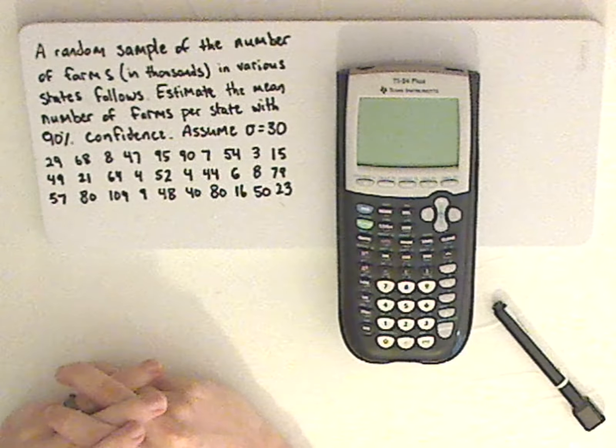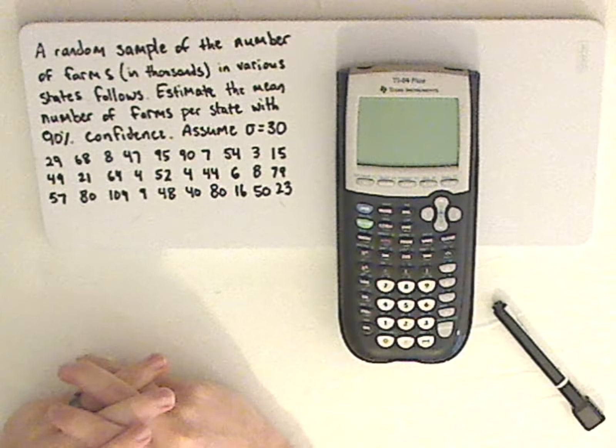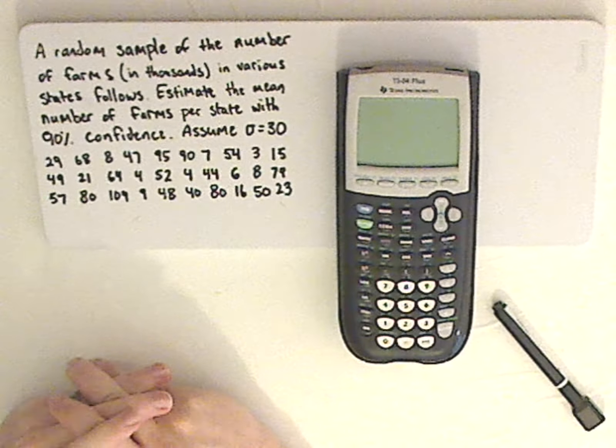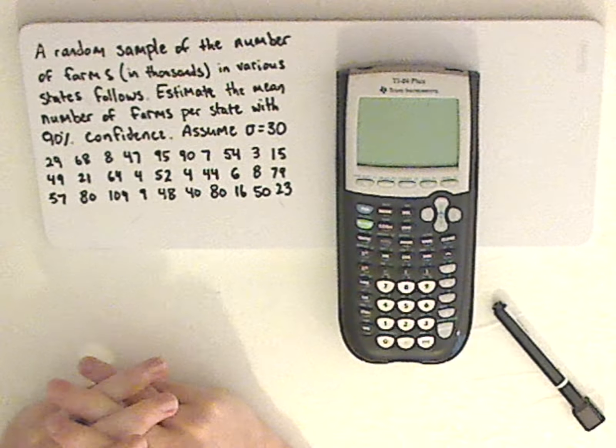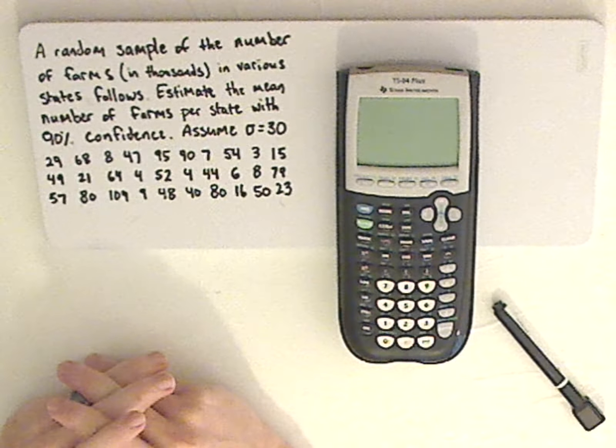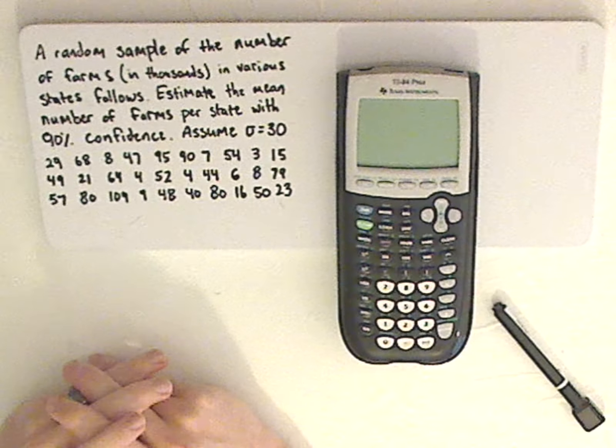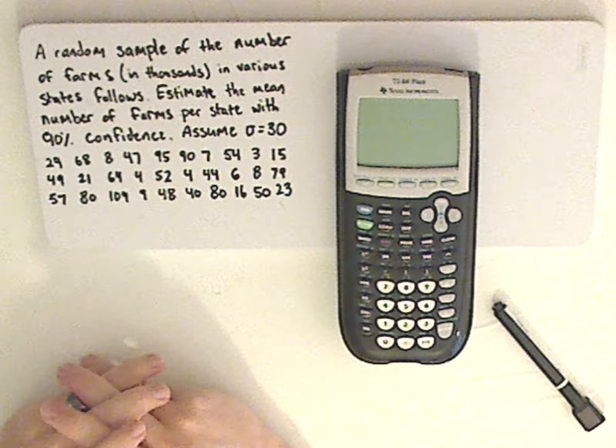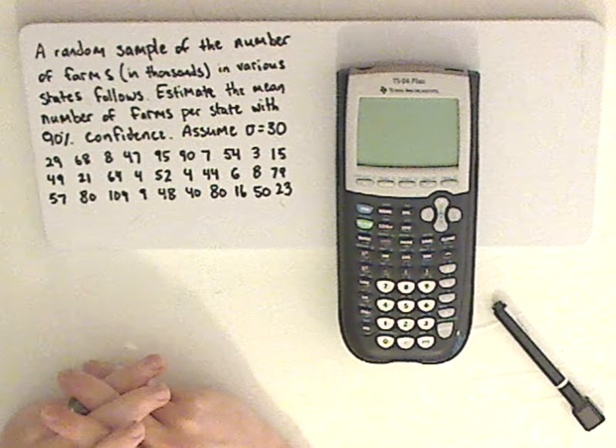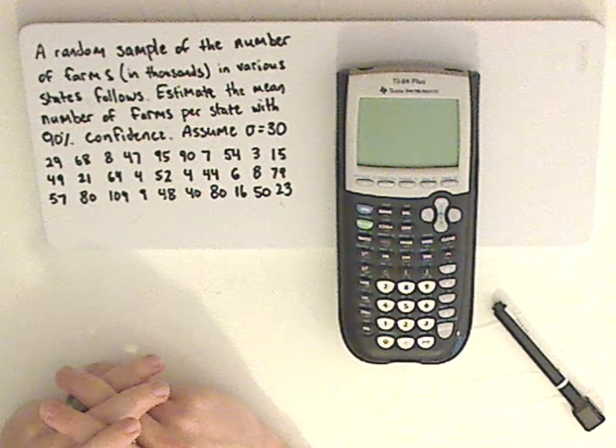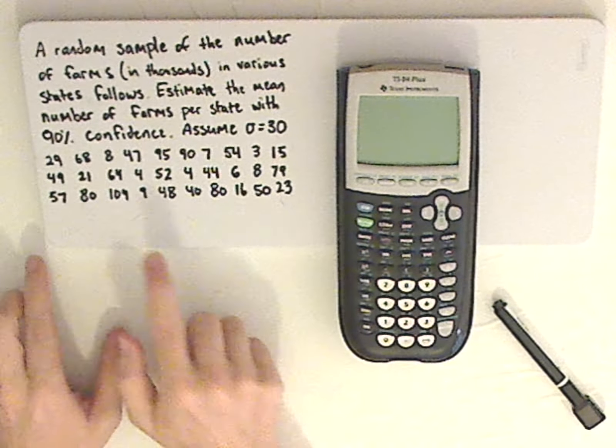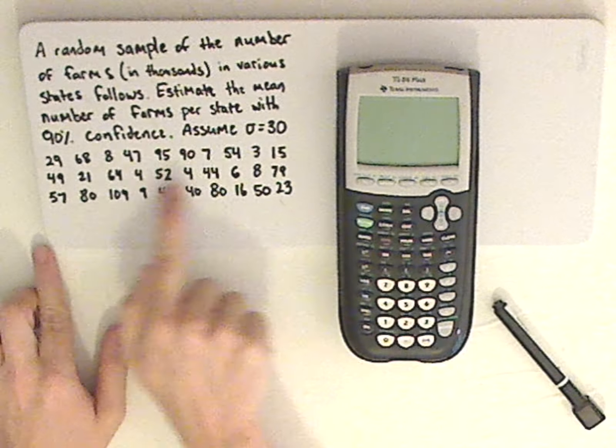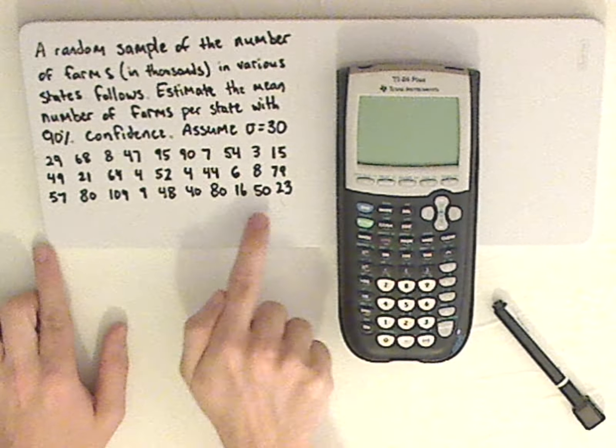A random sample of the number of farms in thousands in various states follows. Estimate the mean number of farms per state with 90% confidence. Assume sigma equals 30, which is the standard deviation of the population, and then you have all these various amounts.